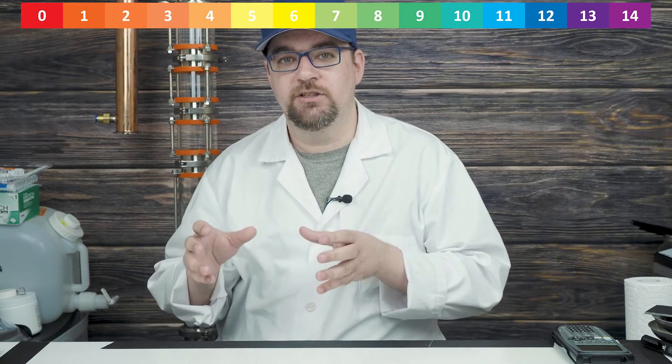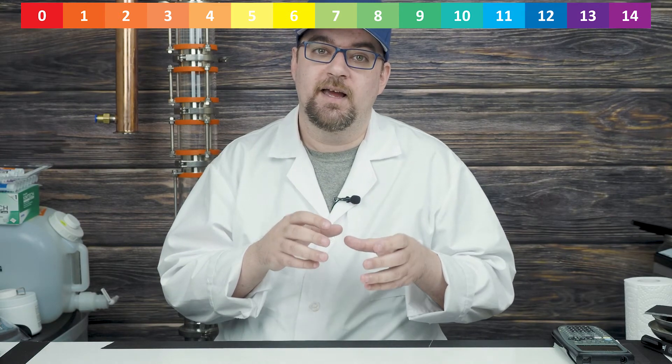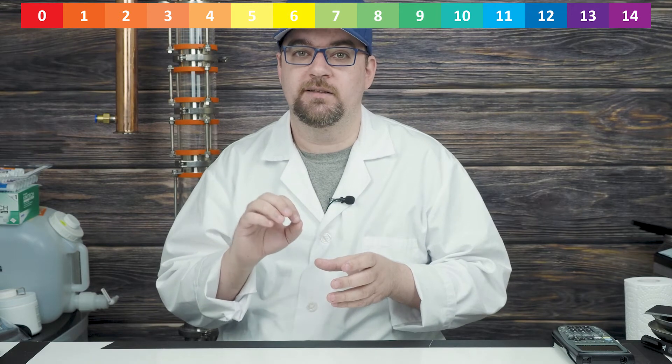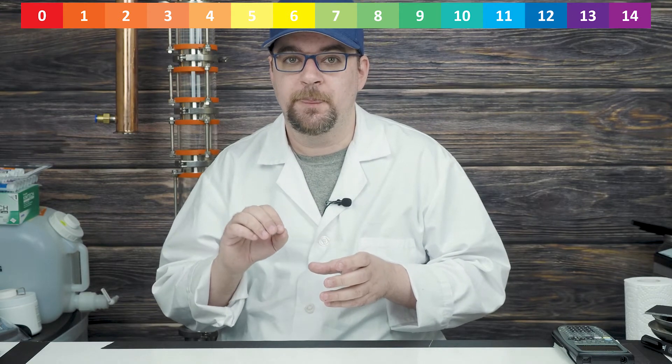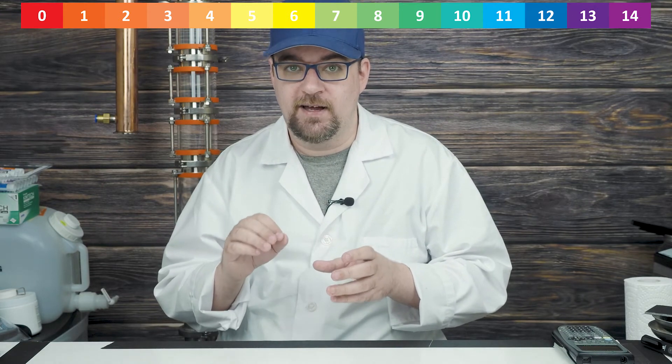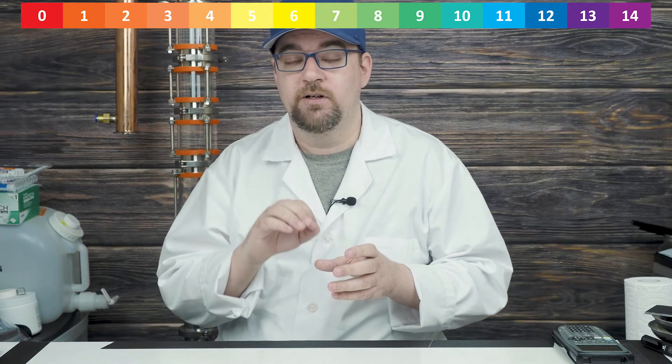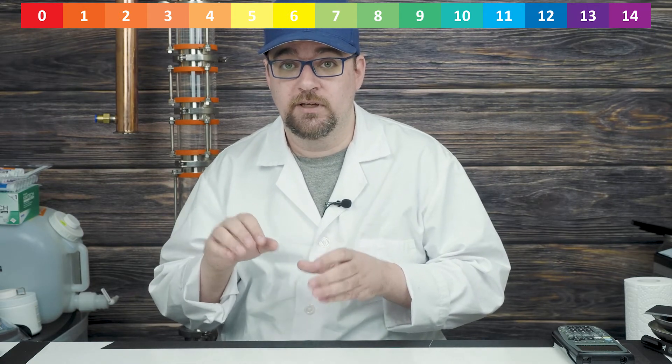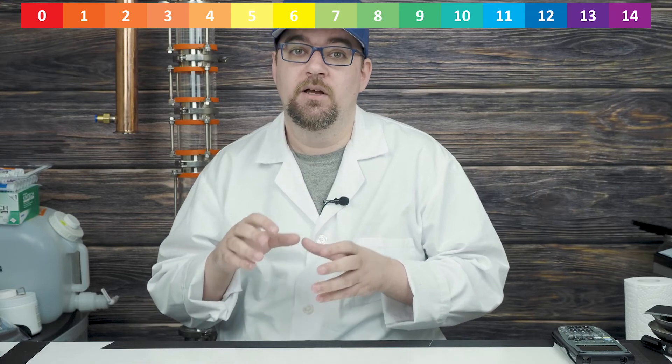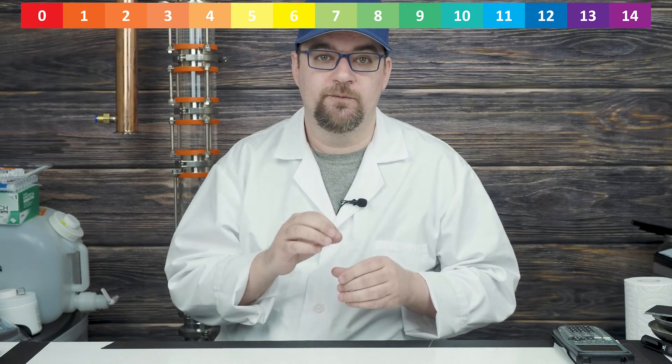Each whole number change is an order of magnitude higher or lower in concentration of hydrogen ions than the last. So a pH of five has 10 times more hydrogen ions as a pH of six. You can in fact have acids with a value lower than zero, including negative values, and bases with a pH higher than 14. But we don't need to worry about those because we won't be working with concentrations that high.